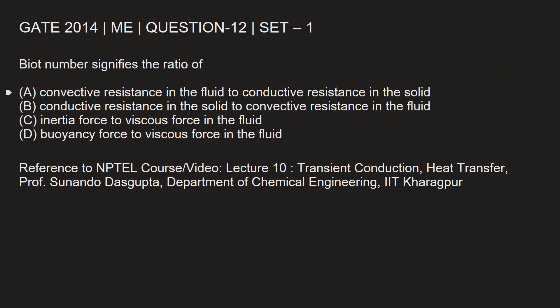Going back to mark the correct option — Option B states: conductive resistance in the solid to convective resistance in the fluid. Option A has similar language but actually denotes the Nusselt number. Option B correctly denotes Biot number. Option C — inertia force to viscous force in the fluid — is the Reynolds number. Option D — buoyancy force to viscous force in the fluid — is the Grashof number. So A, C, and D are not related to Biot number; B is the correct answer.